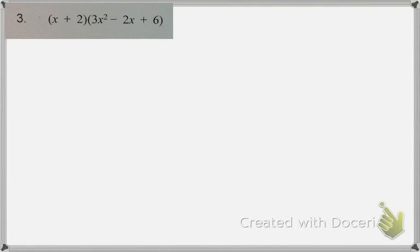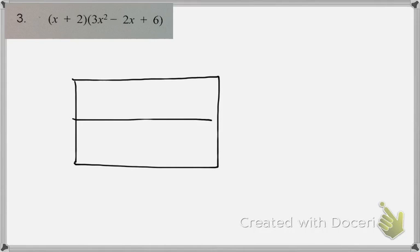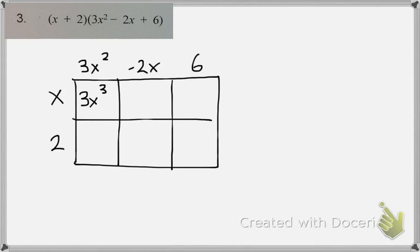The box method really works best for larger polynomials, like when you have a trinomial. So I can set up a 2 by 3 box. So I have x and 2, and I have 3x squared, negative 2x, and positive 6. So remember, the boxes tell you exactly what you should be multiplying.